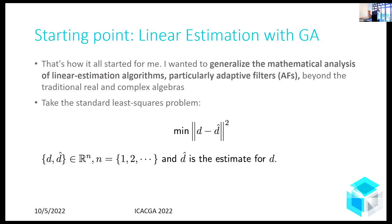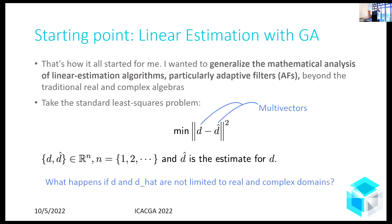Here's how everything started for me. Back in my PhD years, everything was about linear estimation. What I wanted to do was minimize the standard least squares problem — find the best d-hat to minimize this cost function. This is the basics for almost everything in signal processing. But the main question I posed was: what if those quantities become multi-vectors? What can I do if they become multi-vectors, especially in the context of adaptive filters?